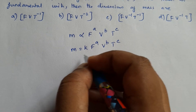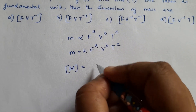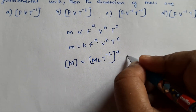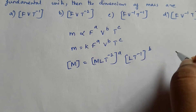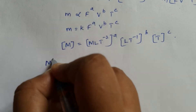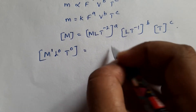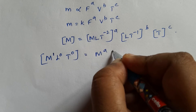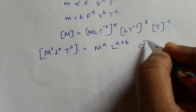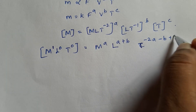Now we apply dimensions. The dimension for mass is M. M equals k — k has no dimension — times dimension for force [M·L·T⁻²] raised to a, times dimension for velocity [L·T⁻¹] raised to b, times dimension for time T raised to c. So the left side is M¹·L⁰·T⁰, and the right side is M^a · L^(a+b) · T^(−2a−b+c).